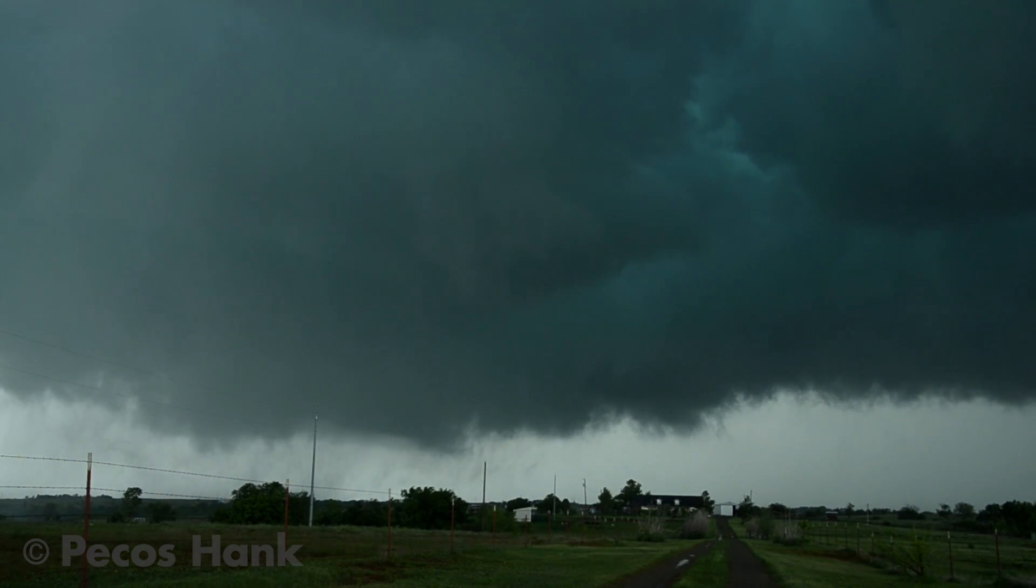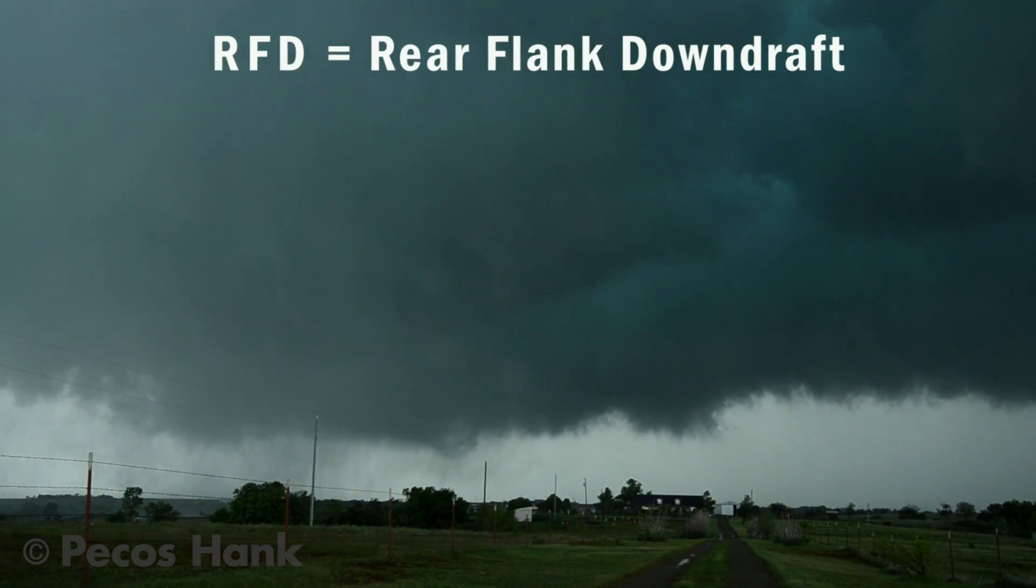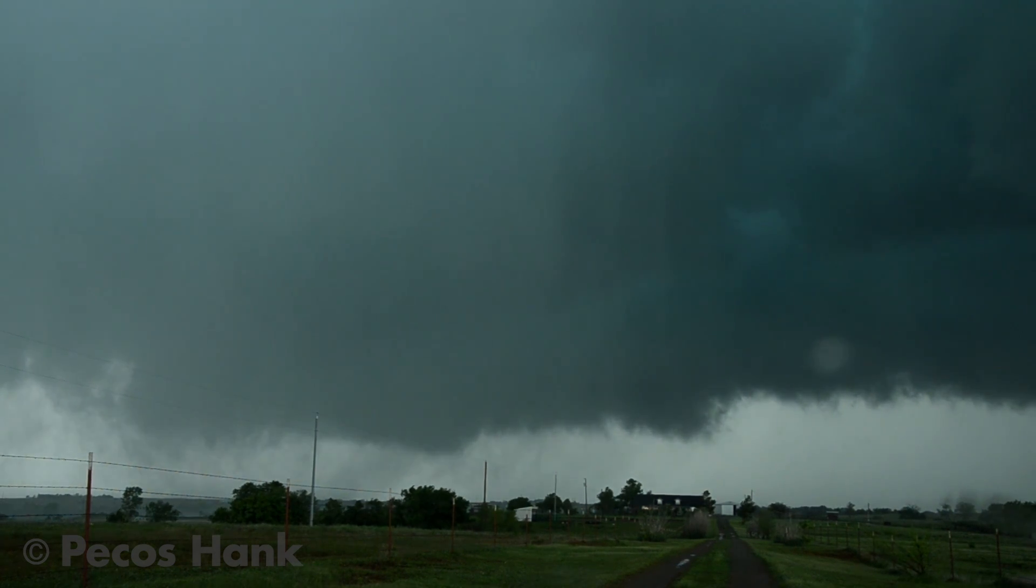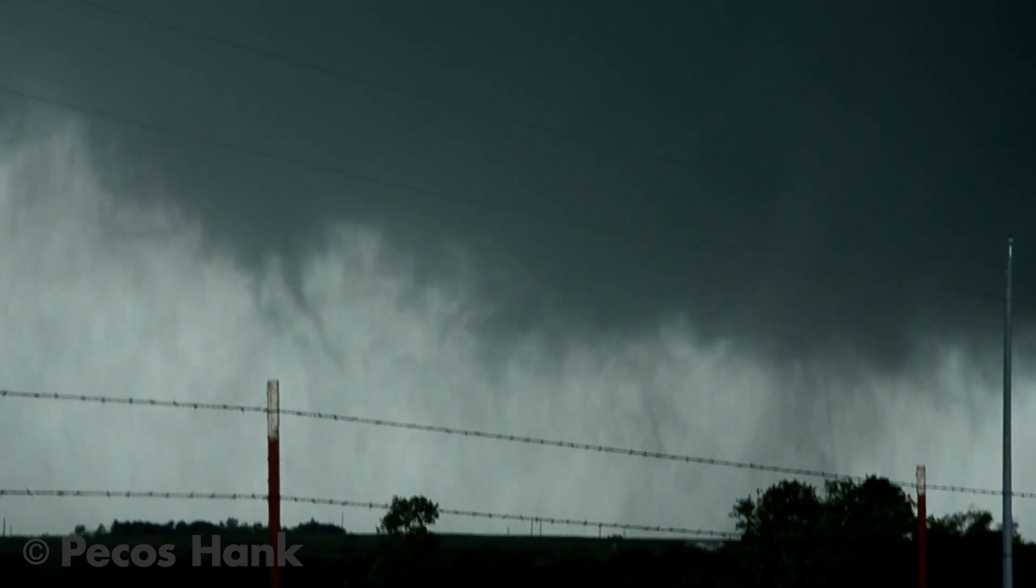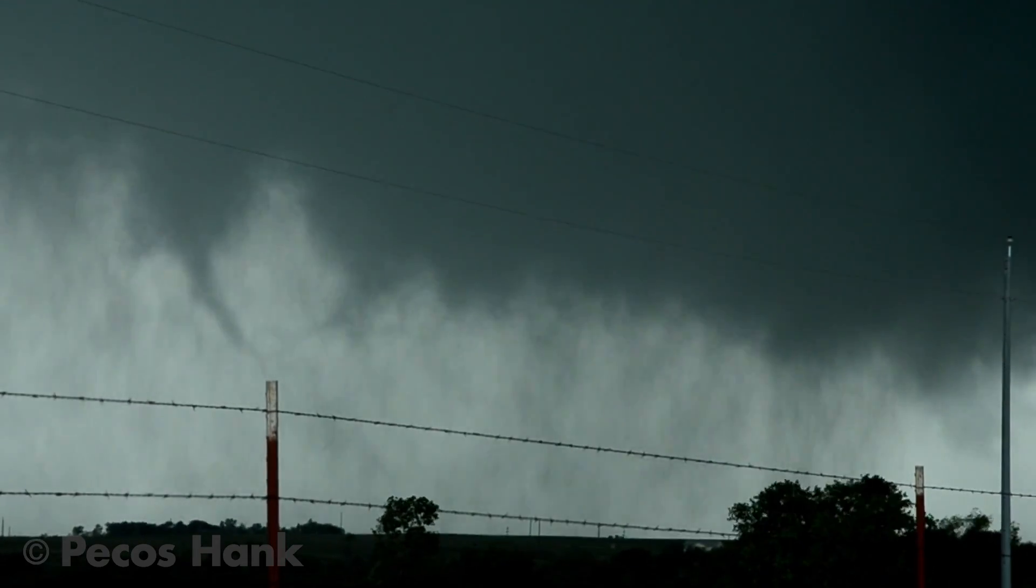I continue to make the assertion that you do not need a rear flank downdraft to have a tornado or at least to maintain a strong tornado. So one of the leading theories of tornado genesis involves a downdraft in the rear flank that triggers a tornado. And you addressed that really well in our first talk.